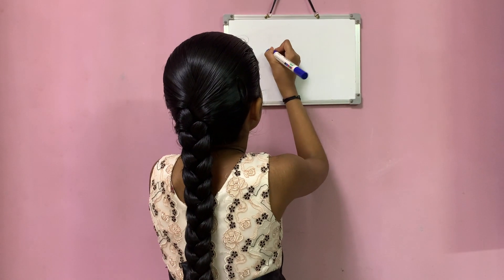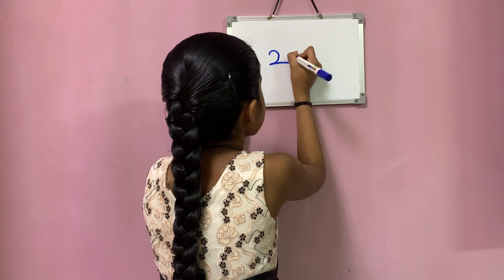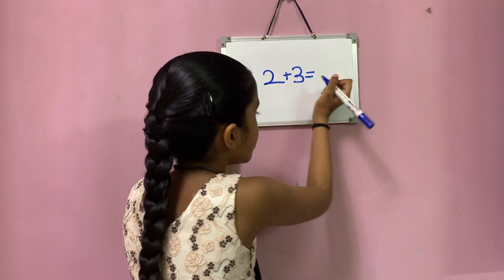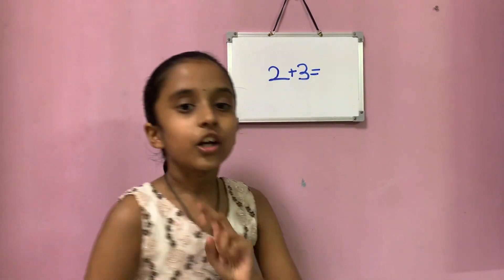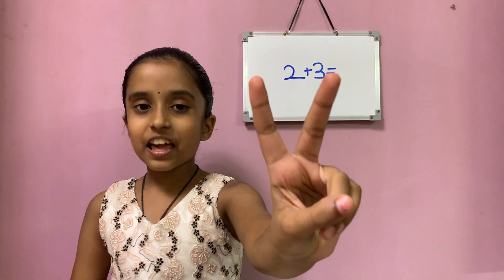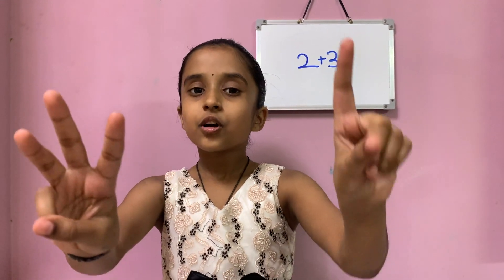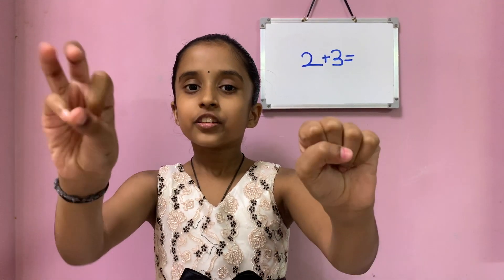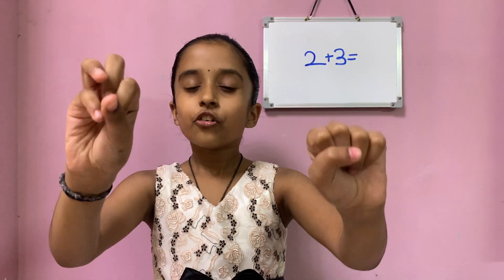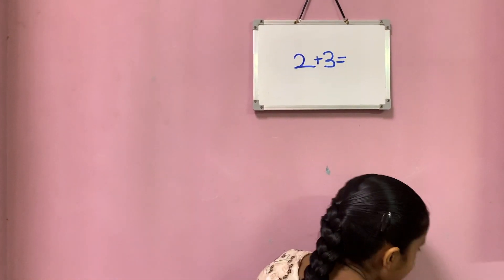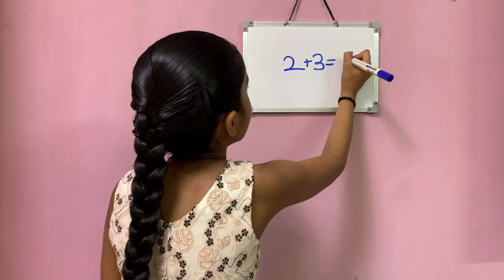So here I am writing two plus three equals. Put two in my left hand and three in my right hand. Now let's count: one, two, three, four and five. So the total answer is five.